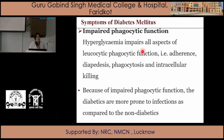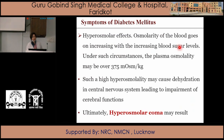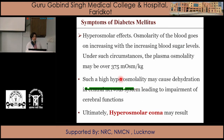Impaired phagocytic function occurs because of hyperglycemia — all steps of phagocytosis are impaired by increased blood glucose levels, making diabetic patients more prone to infection than non-diabetic persons. Hyperosmolar effects occur as continuous increase of glucose in the blood leads to hyperosmolality exceeding 375 milliosmoles per kg. This causes dehydration in the central nervous system, leading to impairment of cerebral function and ultimately hyperosmolar coma in diabetic patients.